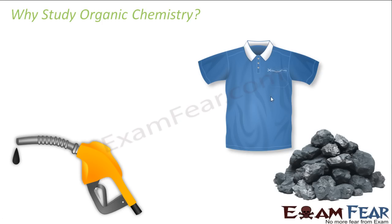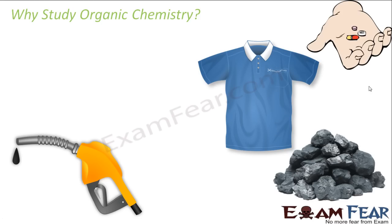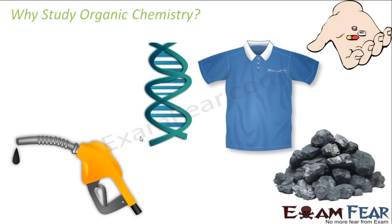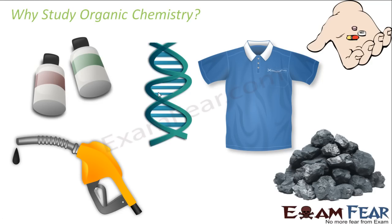The clothes we wear — cotton and textiles — are also organic. Most of the medicines we consume are organic materials made of carbon, hydrogen, and other compounds. DNA, the deoxyribonucleic acid critical for our blood, skin, and muscles, and responsible for our similarity with our parents, is also an organic compound. Even the dye used to color clothes is organic material. We have wide applications of organic material in day-to-day life.